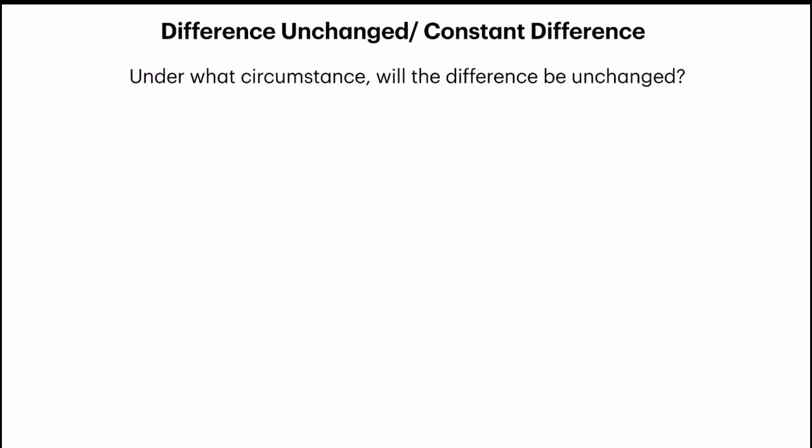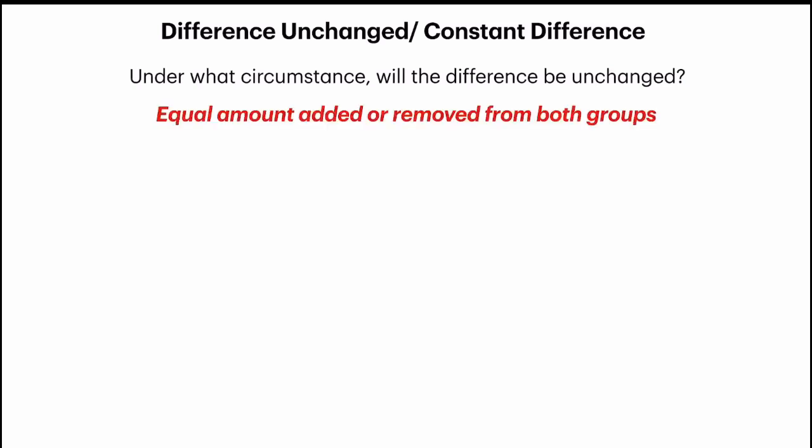The topic we're going to cover about ratio is difference unchanged, or constant difference. Under what situation in a ratio word problem will there be a difference unchanged or constant difference? It is when there is an equal amount of items being added or taken away from both groups in the ratio given.